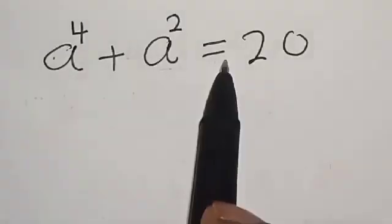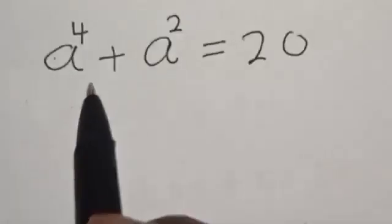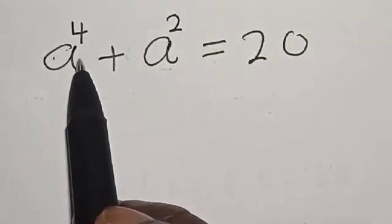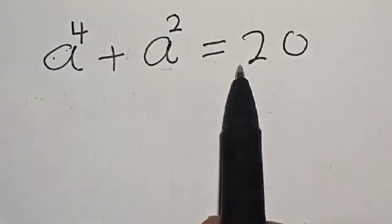a to the power 4 plus a squared equals 20. Hi everyone, welcome to my class. In this class, we want to find the value of a from this given equation: a^4 + a^2 = 20.